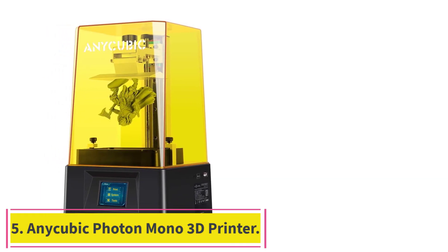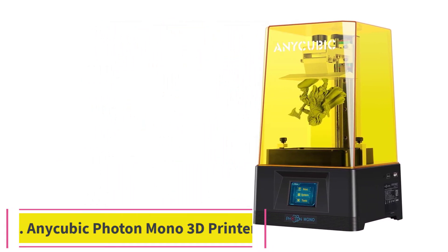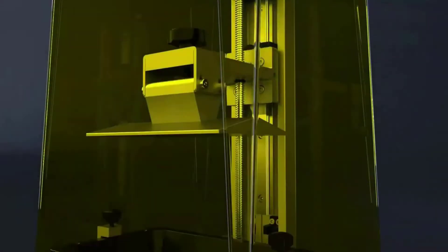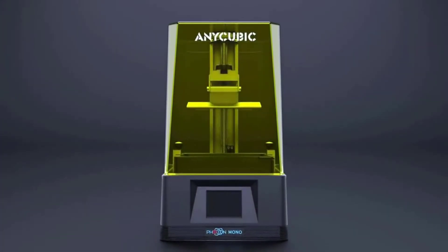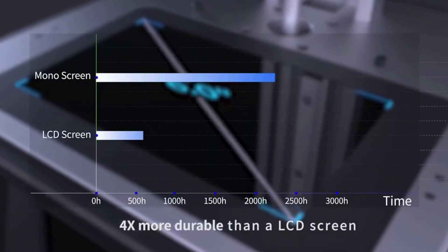Number 5, Anycubic Photon Mono 3D Printer. Both seasoned veterans and newcomers to 3D printing will appreciate the Anycubic Photon Mono 3D Printer. It's a high-resolution resin printer that replicates intricate details and body contours perfectly.